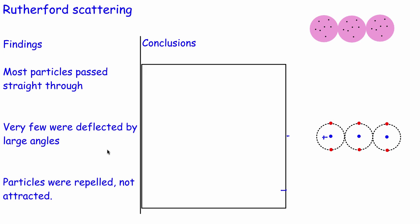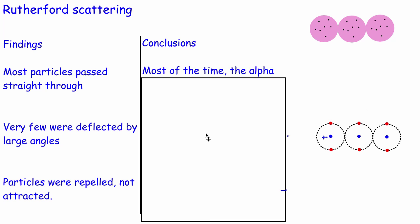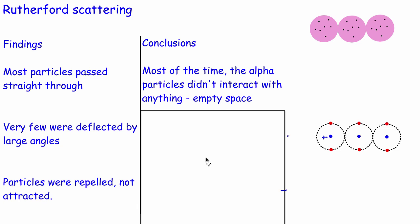So these are the three findings. From just three observations, Rutherford went from the plum pudding model to our modern model of the atom. The first conclusion: most particles pass straight through, which means that because alpha particles didn't interact with anything, most of the atom must be empty space. This doesn't immediately change the plum pudding model on its own, but when you couple it with the next two findings, you'll see that the plum pudding model can't possibly hold.